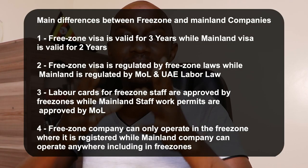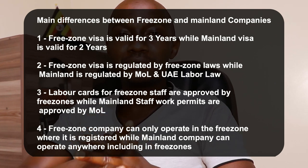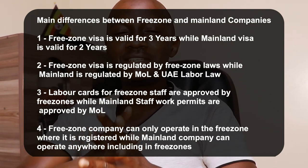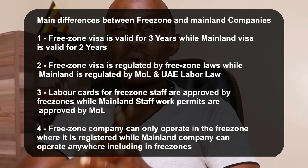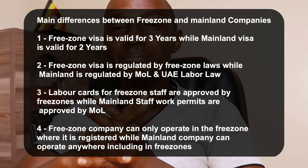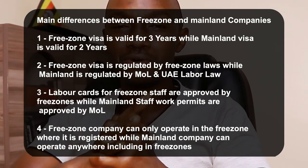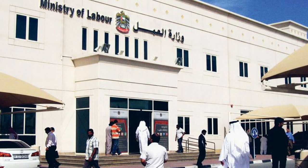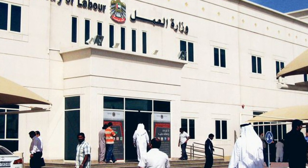The labor card for a free zone company staff is approved by the respective free zone authorities, while the labor card or work permit for a mainland company staff is approved by the Ministry of Labor. Lastly, a free zone company can only operate within the free zone where it is registered.